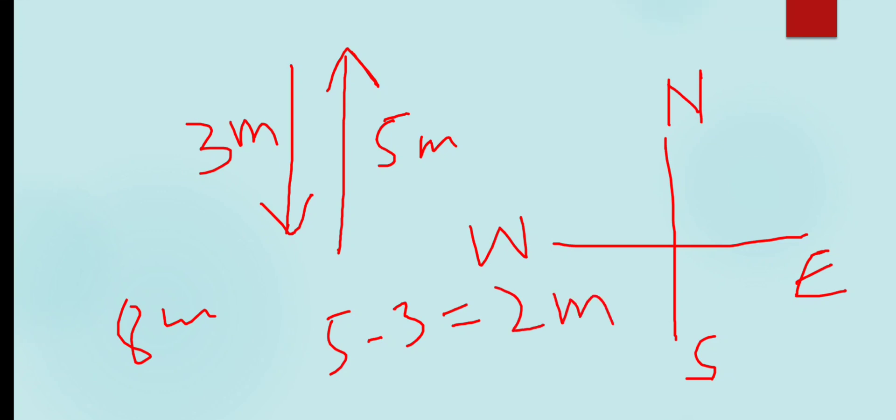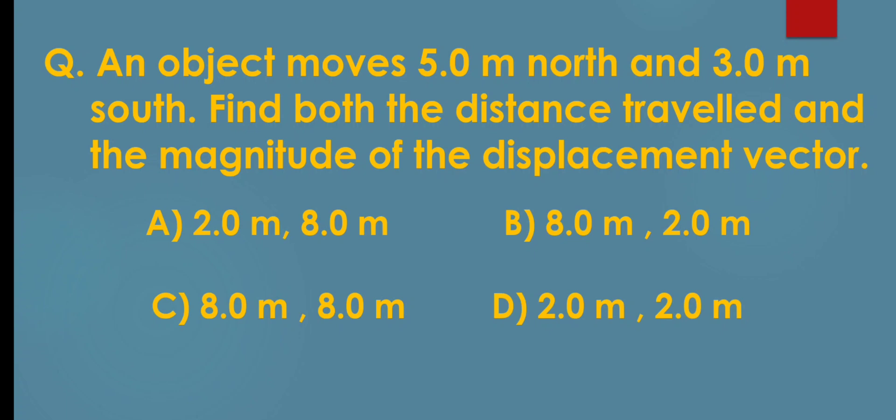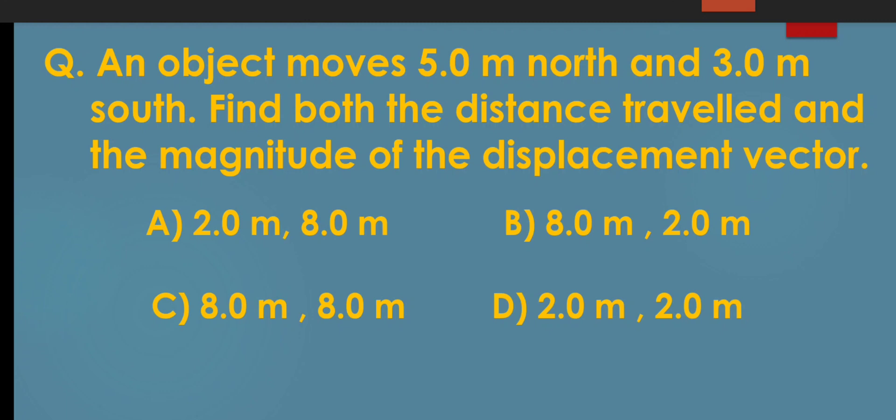So the correct option will be - we are asked here to find both distance traveled and the magnitude of the displacement. Distance is 8 meters and displacement is 2. So the correct option is B, 8 meters and 2 meters.